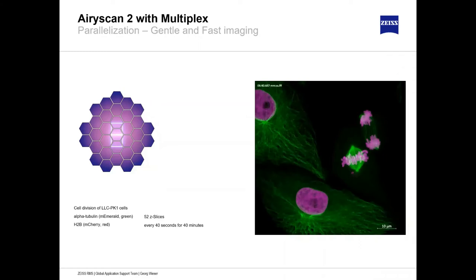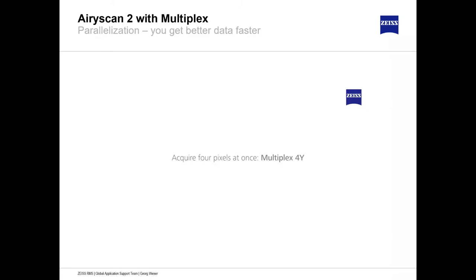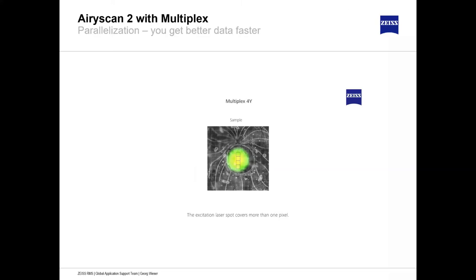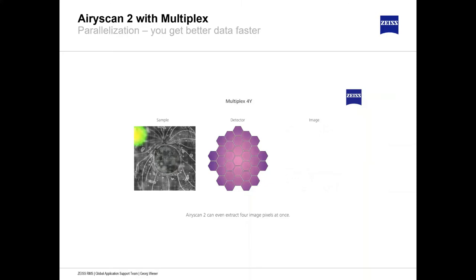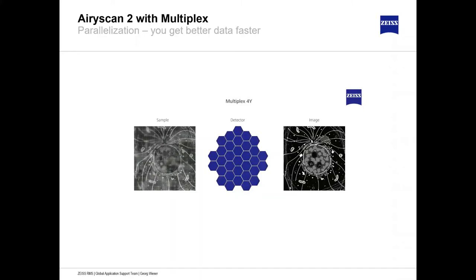Going even further, the multiplex 4Y mode allows four lines of super resolution image content to be acquired simultaneously. The excitation spot covers more than one pixel and four image pixels are extracted at the same time, increasing speed tremendously while still keeping the structural information needed for experiments.